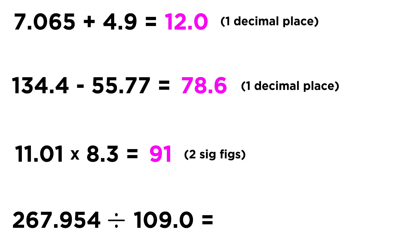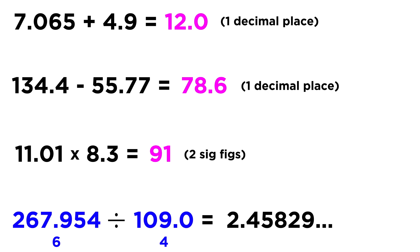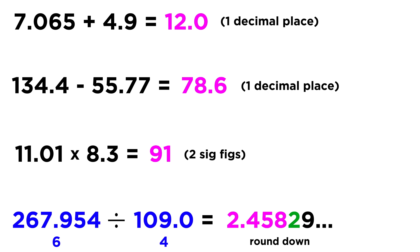Finally, we have 267.954 divided by 109.0. We put that in the calculator and get 2.45829... with a lot of decimal places. The first value has six significant figures. The second value has four — remember, that trailing zero is significant because it is after the decimal point. If it were 1090 without a decimal, that last zero would not be significant. So 109.0 is four significant figures, meaning our answer should have four sig figs. The next digit is 2, so we round down, giving us 2.458.